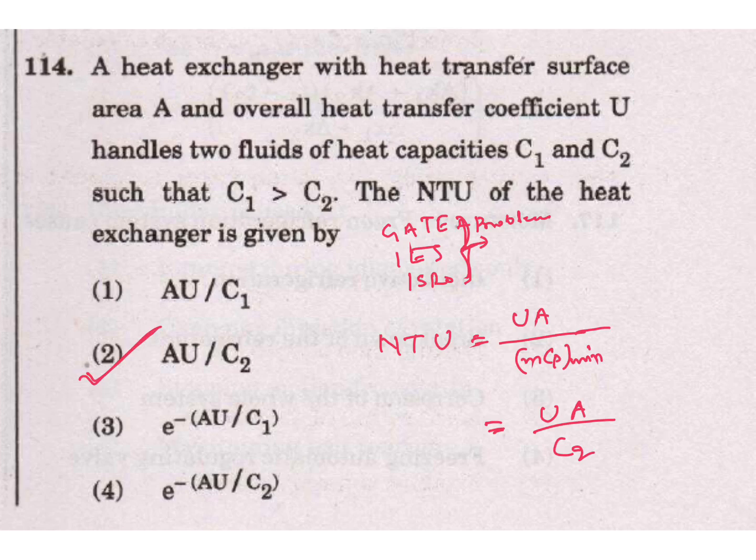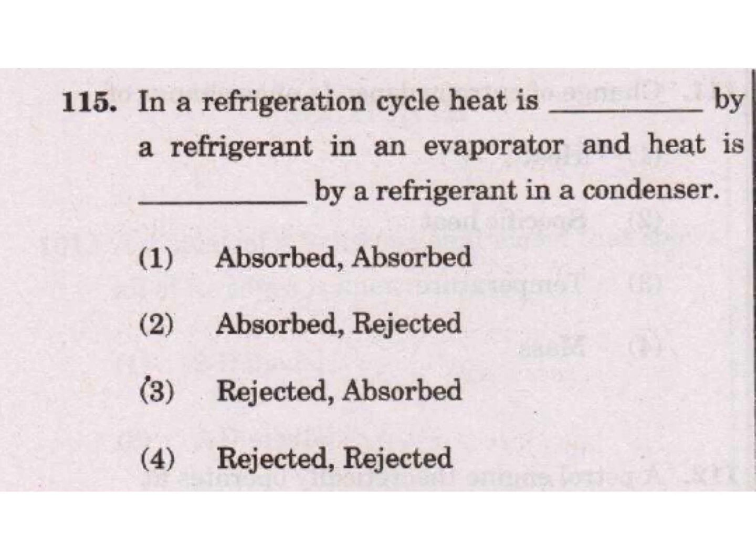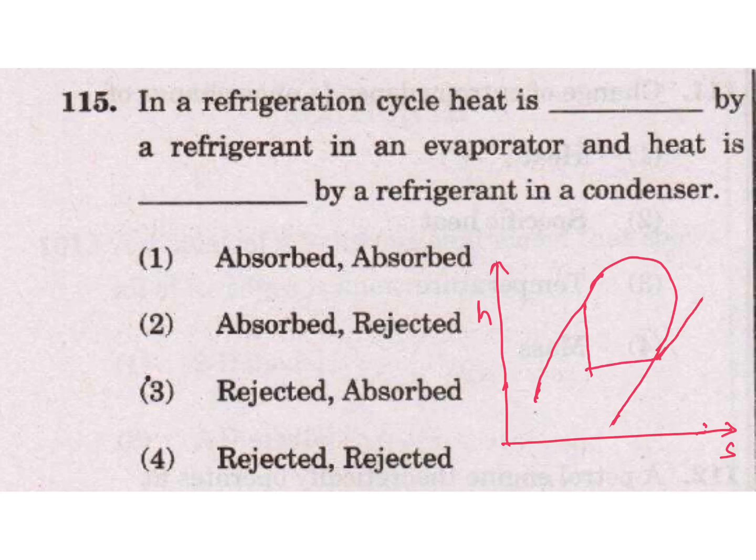Question: In a refrigeration cycle, heat is absorbed by a refrigerant in an evaporator and heat is rejected by a refrigerant in a condenser. This is the H-S plot for refrigeration cycle or VCRS - vapor compression refrigeration cycle. So 1 to 2 is pumping or compression, then 2 to 3 is condensation, 3 to 4 is throttling, and 4 to 1 in evaporator.